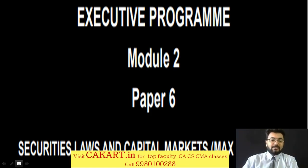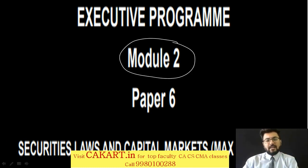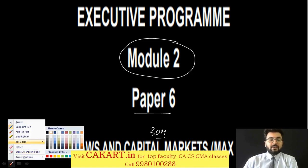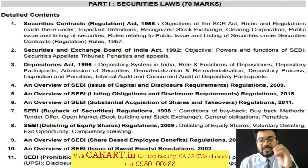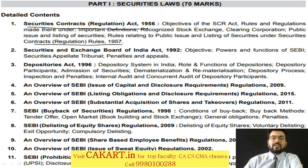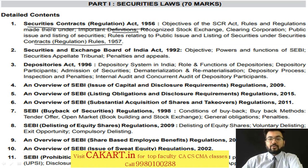Now moving on to the syllabus. Paper 6 - Security Law is going to be there for 70 marks and Capital Market for 30 marks. Part A is Security Law. First we cover Securities Contract Regulation Act 1956 along with Securities Contract Regulation Rules 1957. The interesting portion is the rules. Definitions will be given as font work because they are required to be memorized. I will tell you the best time to learn those.